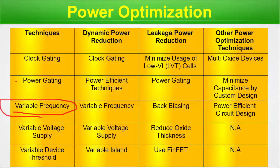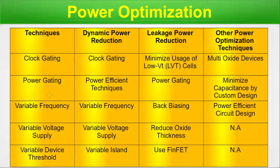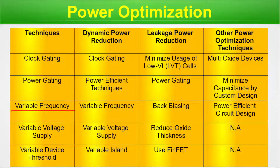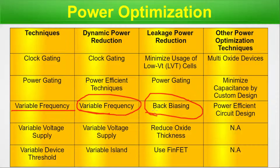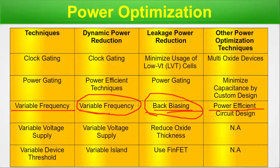Next is variable frequency. By varying the frequency we achieve dynamic power reduction. Leakage power reduction is achieved by back biasing — that means substrate biasing for the CMOS structure. Normally the back bias is kept constant, but if we change the substrate bias of the MOSFET, different power reductions come into play. Basically, substrate leakage is controlled through back biasing. The other optimized method here is power-efficient circuit design.